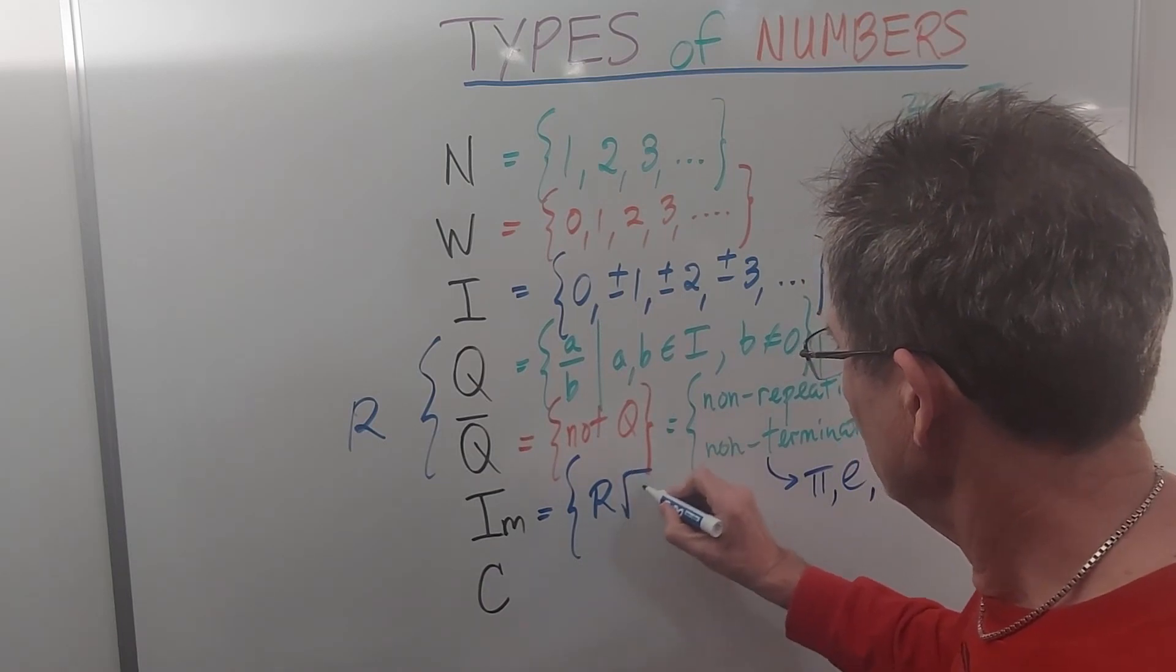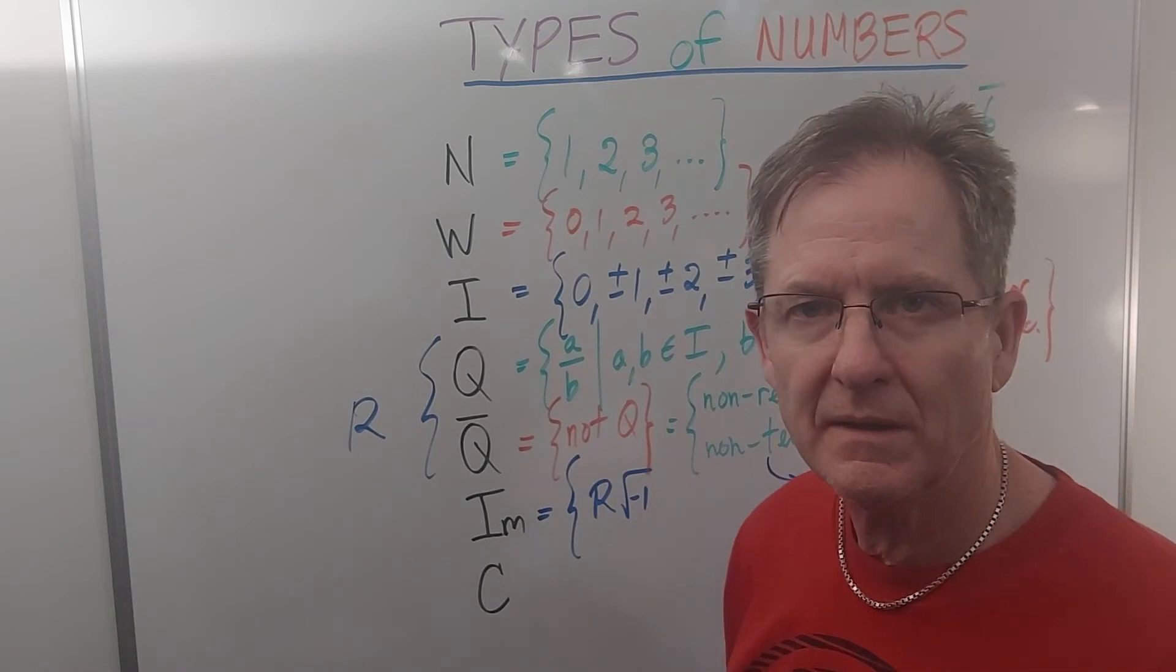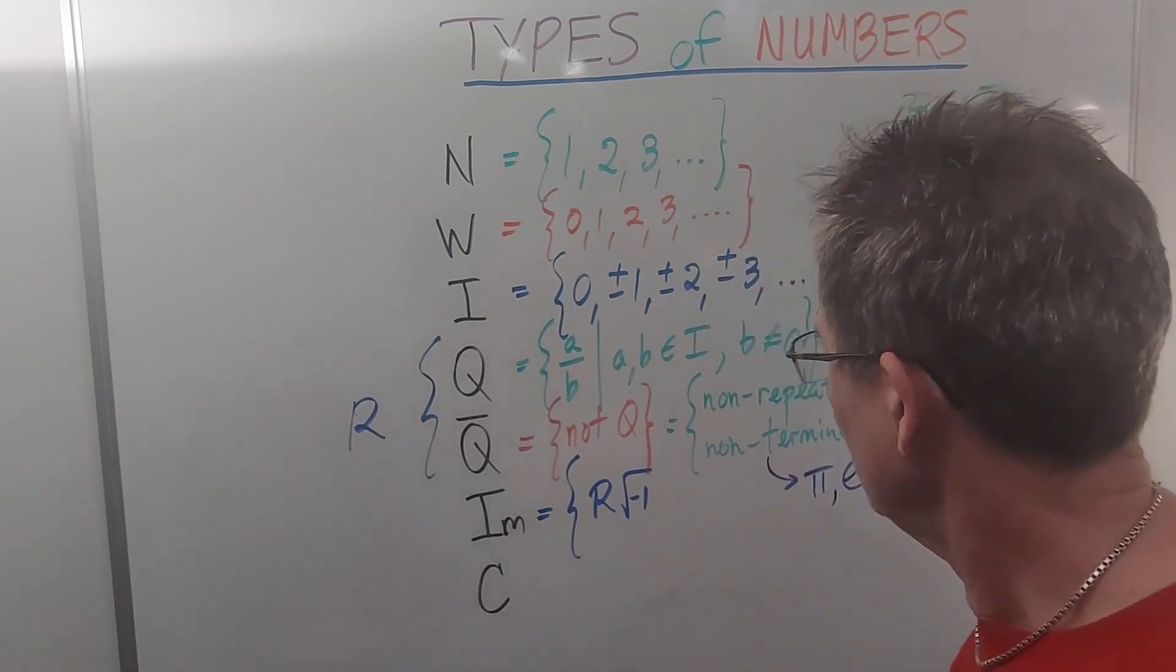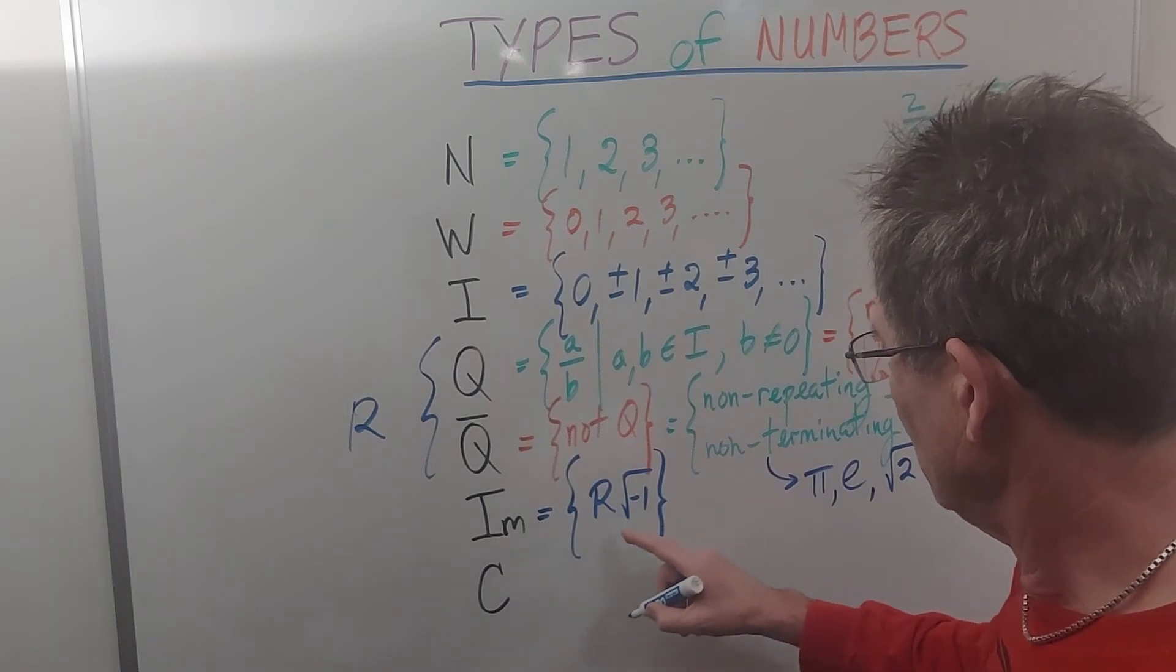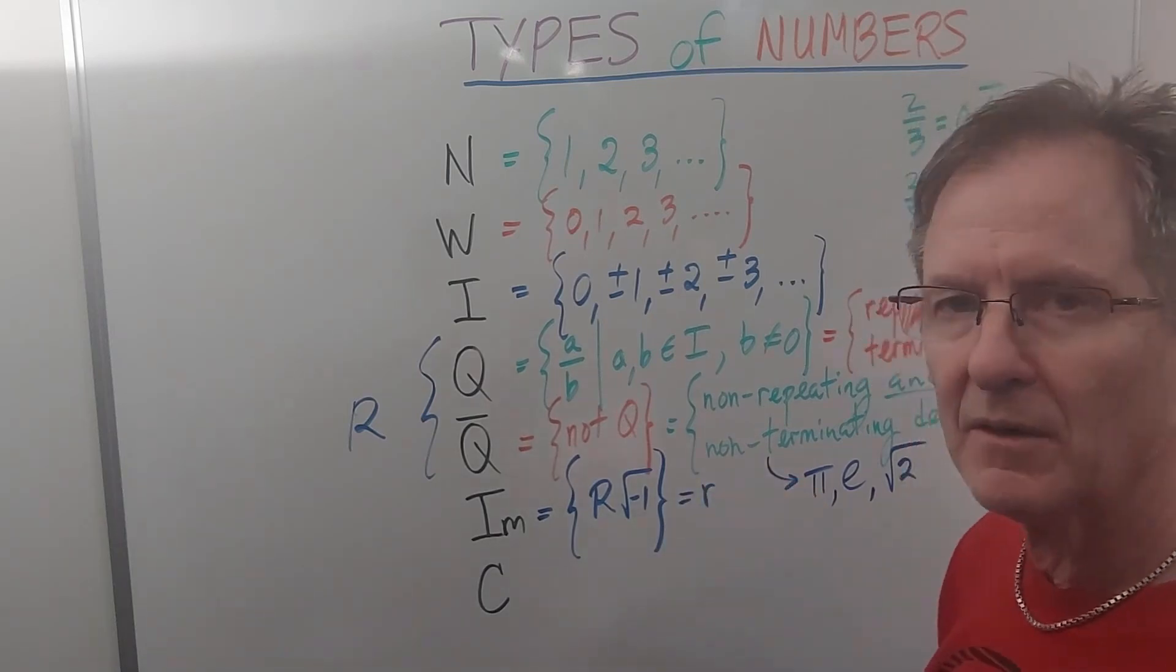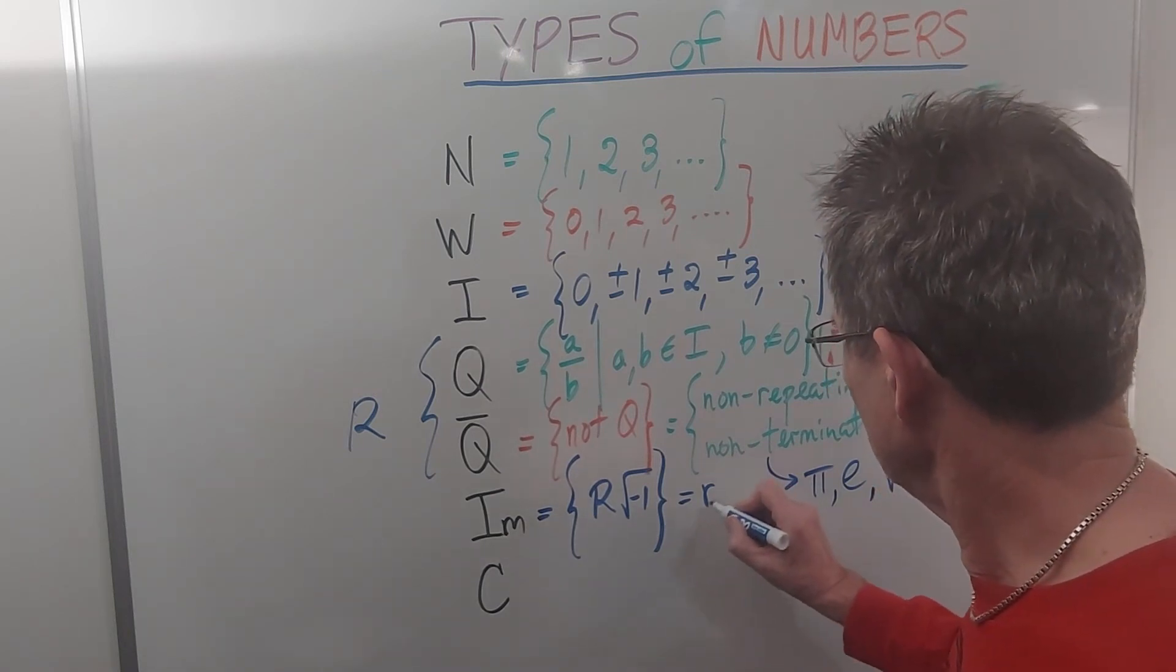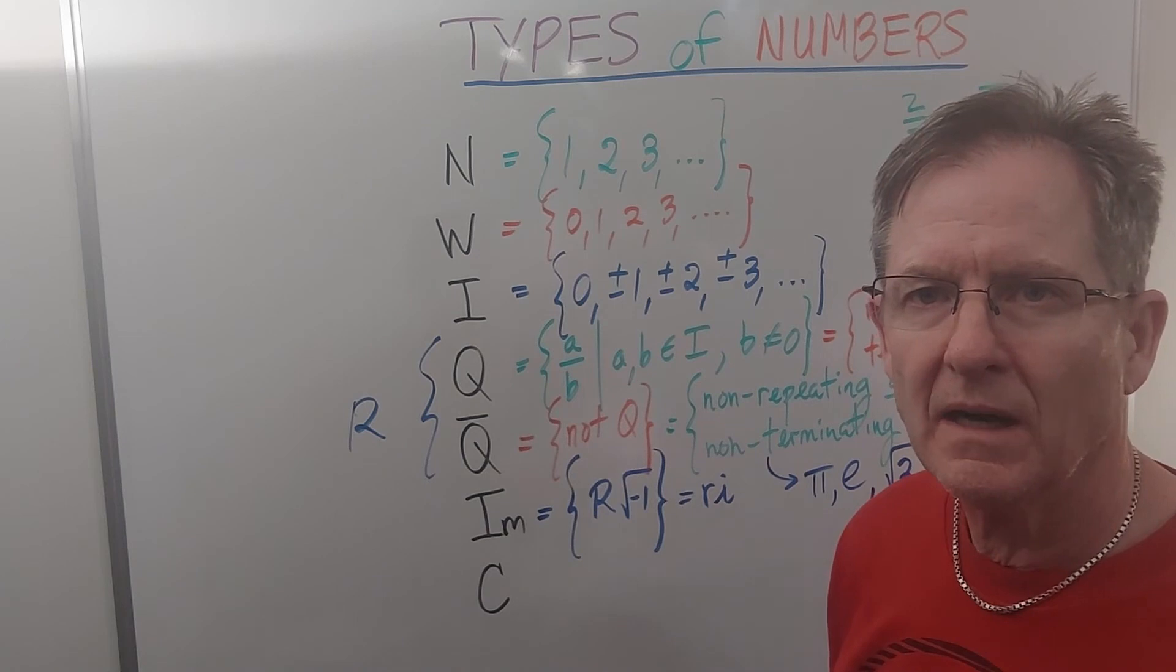So the imaginary numbers are the set of real numbers multiplied by the root of negative 1, because the root of negative 1 is an imaginary number. This might not be the best notation, but that's what I mean by that. Or you could maybe write it as little r representing a real number times the root of negative 1, which is represented by lowercase i.